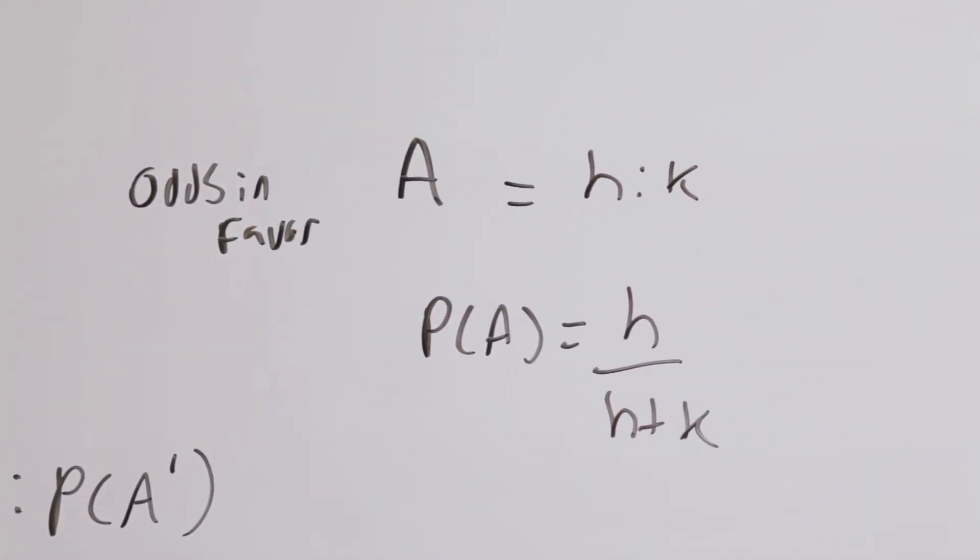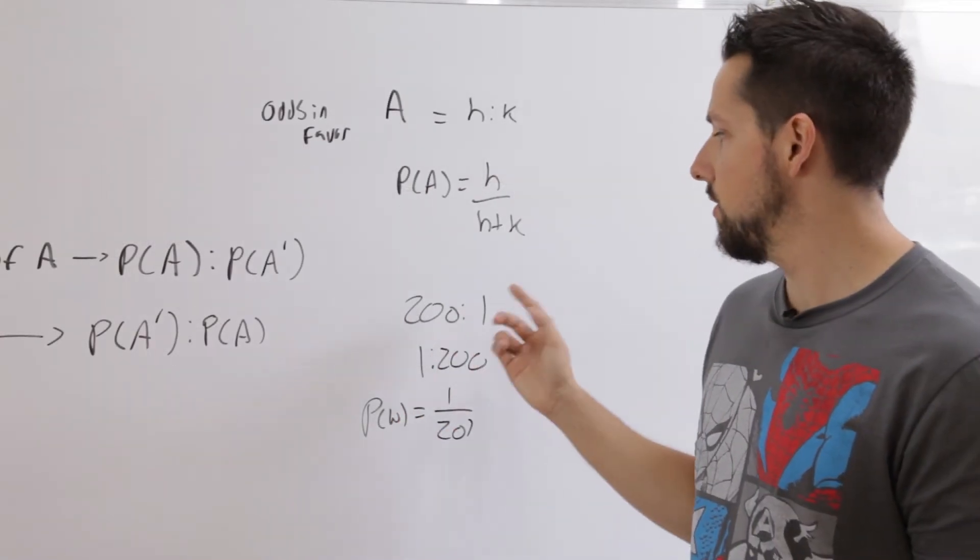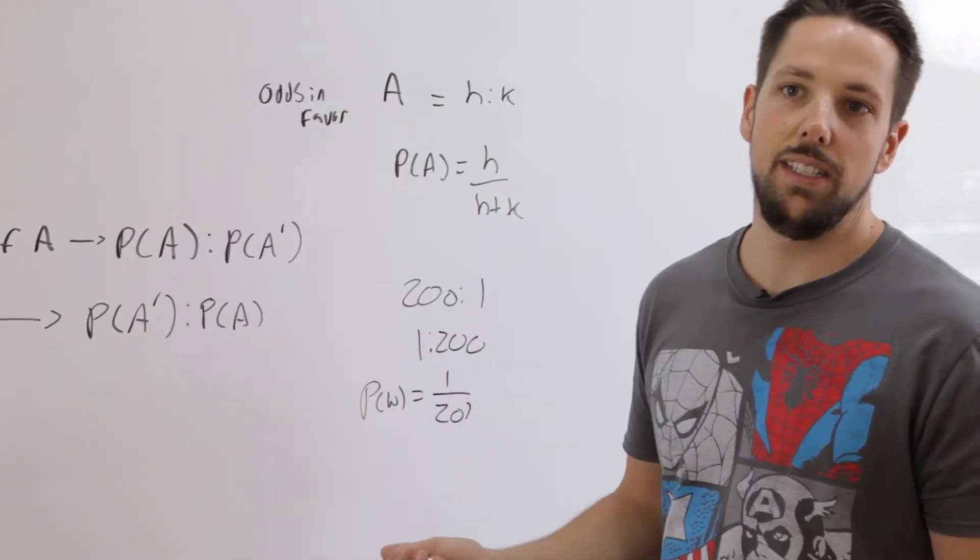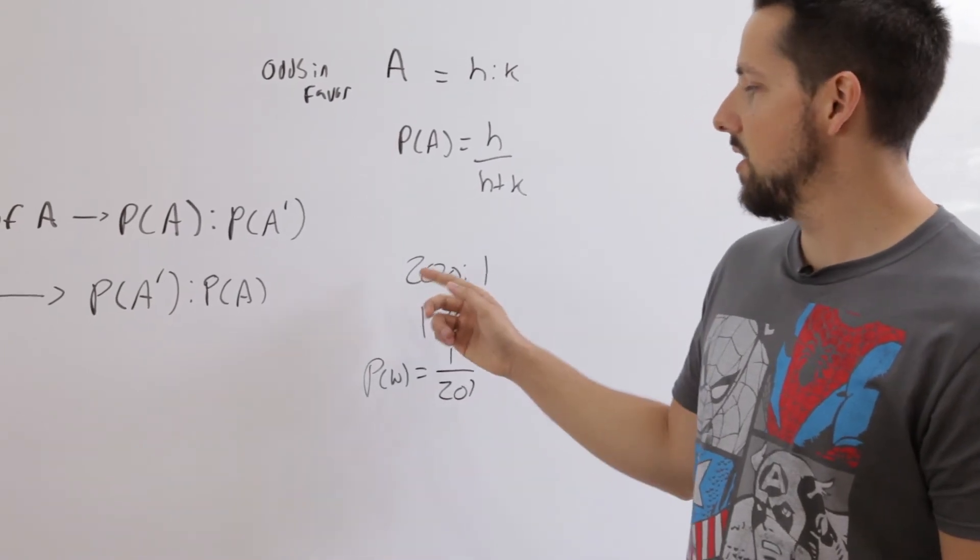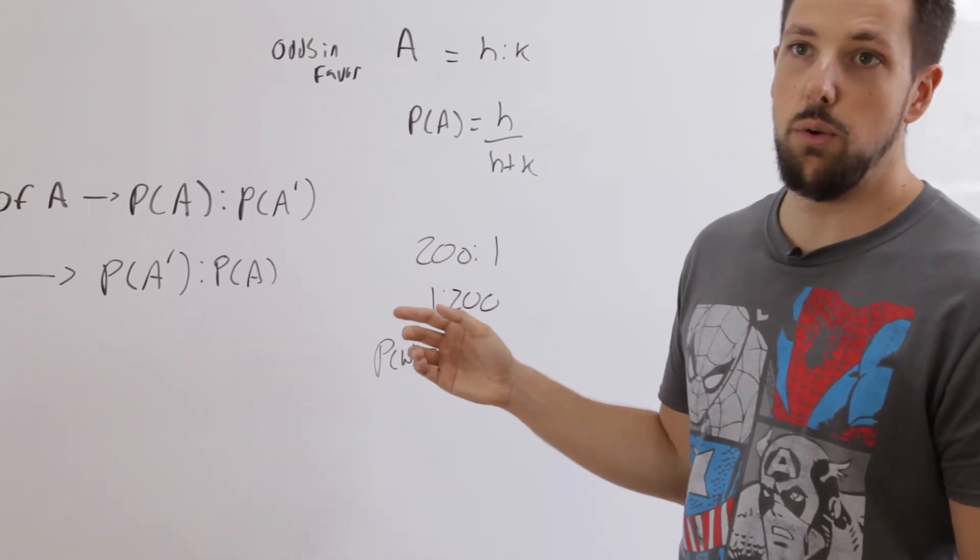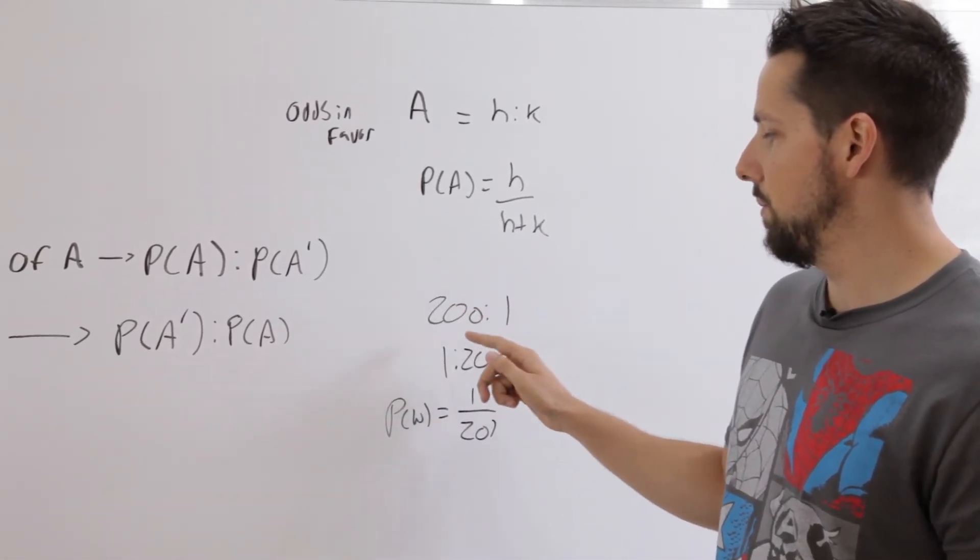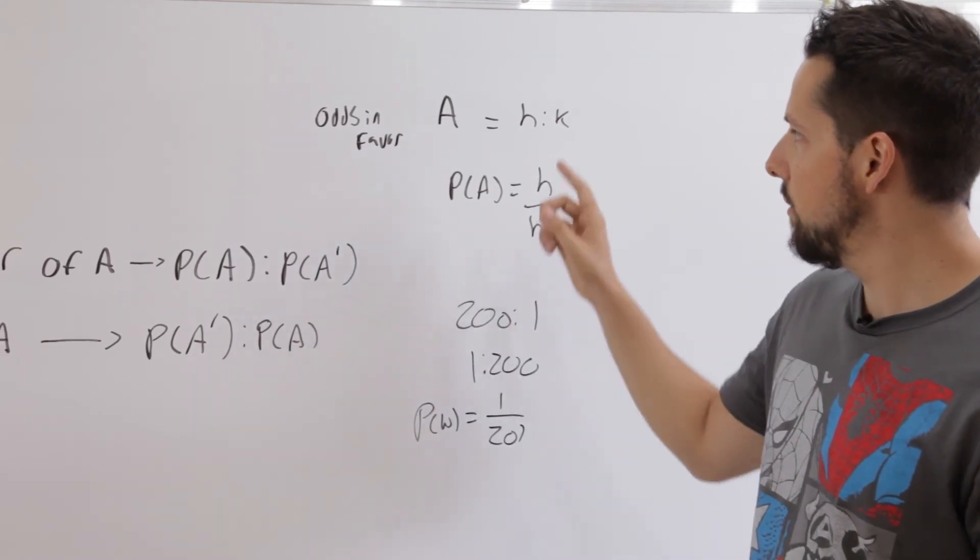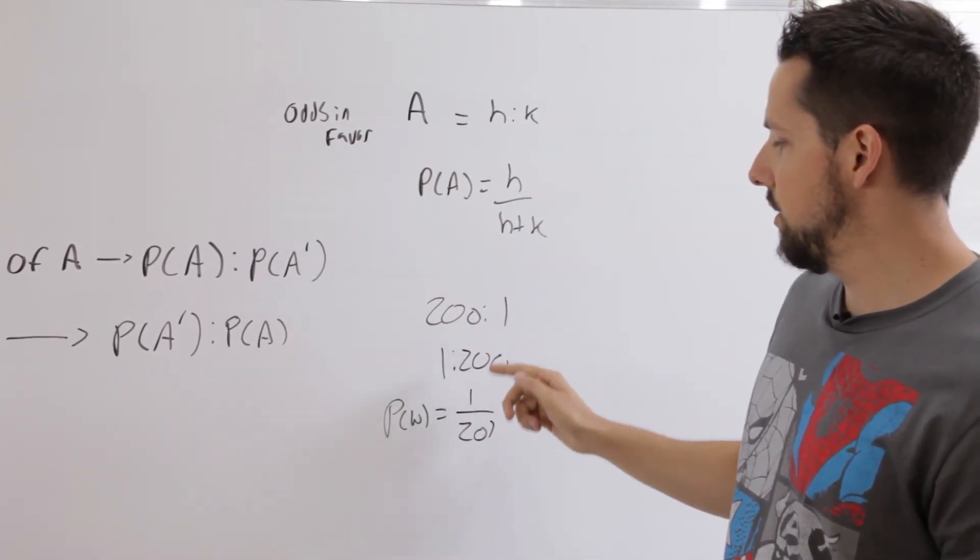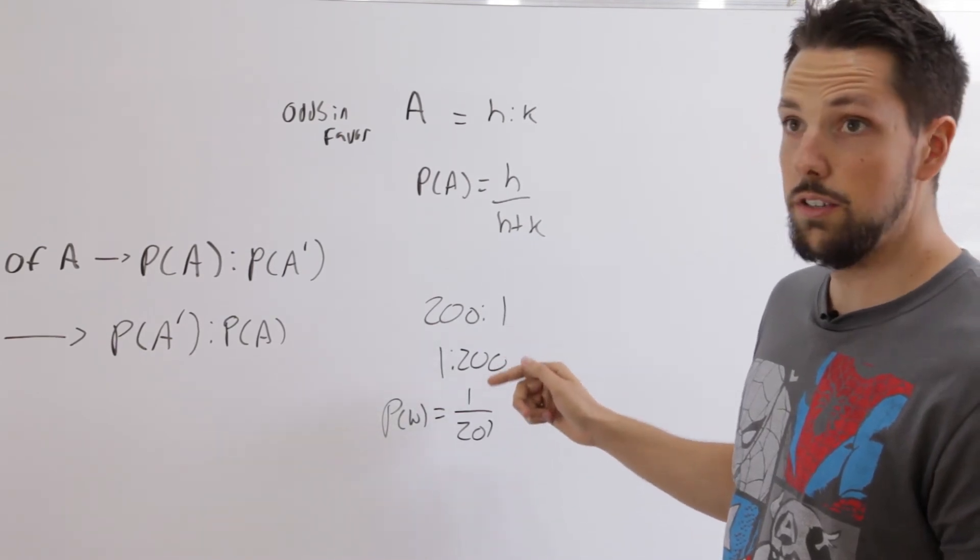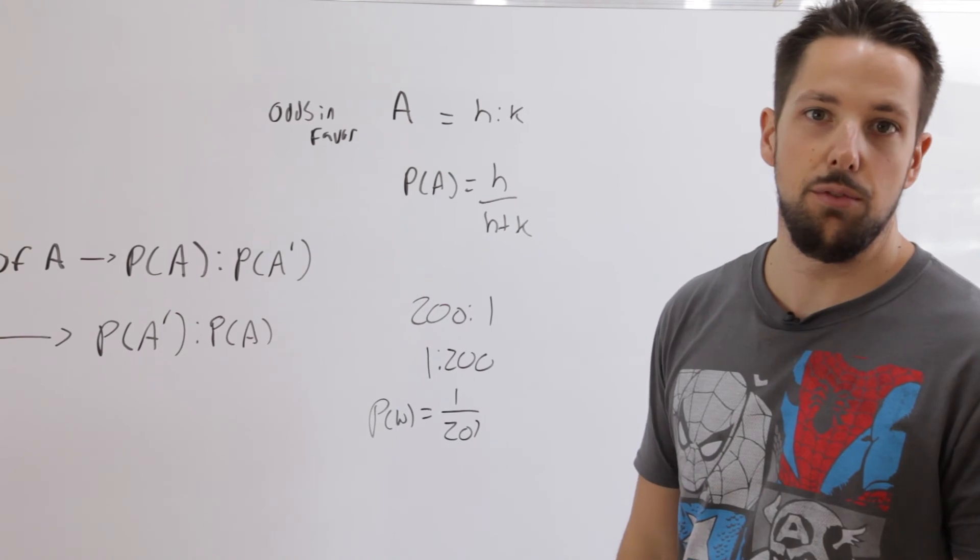We'll do a quick example. Let's say the odds in favor of the Leafs winning the Stanley Cup are 200 to 1. What's the probability that the Leafs don't win the Stanley Cup? Since they give us odds in favor and we're looking for the probability that they lose, we need to flip it into odds against. So 200 to 1 becomes 1 to 200. Now we use this formula to convert it, so we have h to k, 1 to 200, so we have 1 over 200 plus 1. So 1 over 201, and that's the probability that the Leafs win the cup.